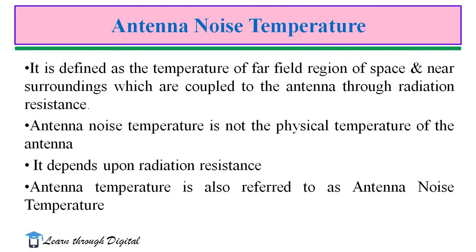Antenna Noise Temperature, or Antenna Temperature, is defined as the temperature of the far-field region of space and near surroundings which are coupled to the antenna through radiation resistance. For example, we consider this is the antenna used for transmitting electromagnetic energy. It is radiating electromagnetic energy in free space and it has the radiation resistance.